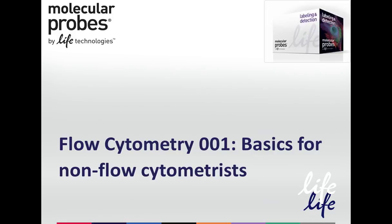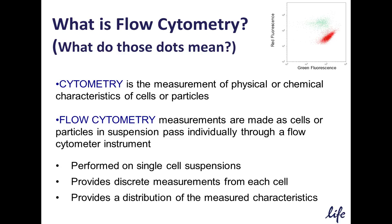Now that we've covered a bit of basic microbiology, I'd like to cover some introductory information for the non-flow cytometrists in the audience. What is flow cytometry — or rather, what do those dots mean? Cytometry is the measurement of physical or chemical characteristics of cells or particles. Flow cytometry refers to measurements made of cells or particles in suspension passing individually through an instrument called a flow cytometer — a technology that simultaneously measures and analyzes multiple physical characteristics of single particles as they flow in a fluid stream through a beam of light.